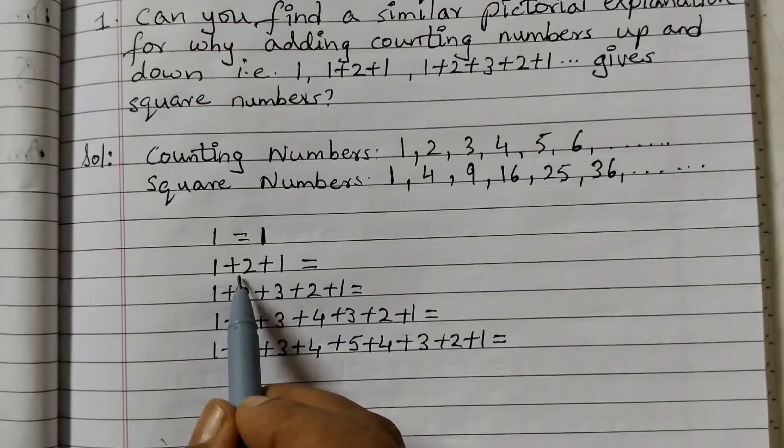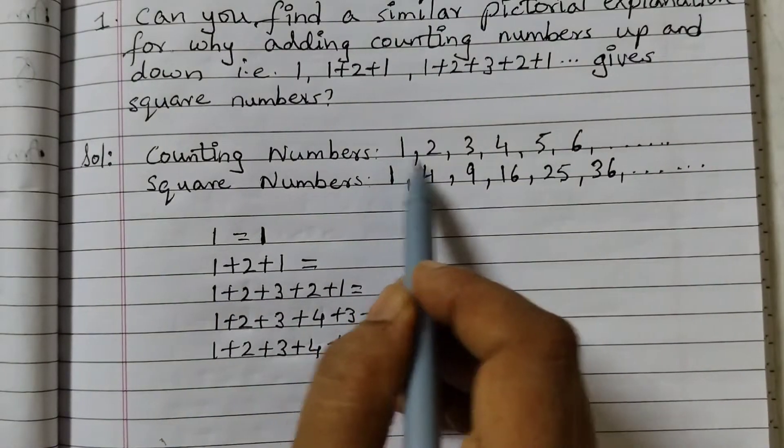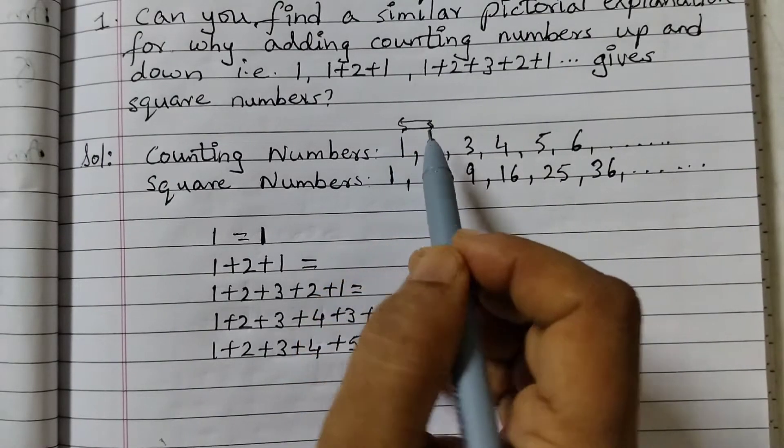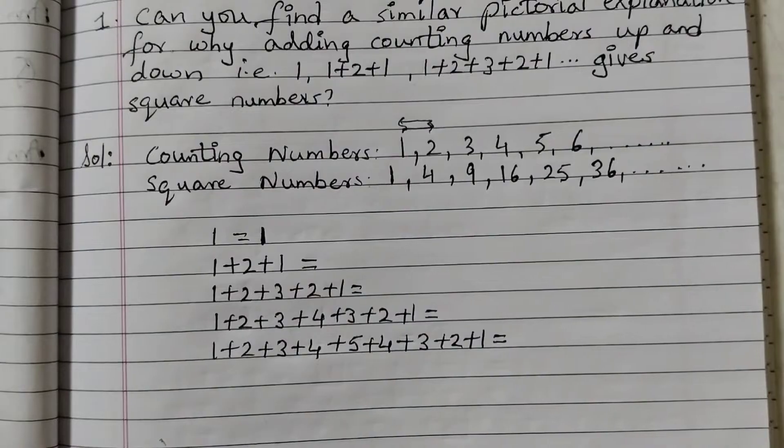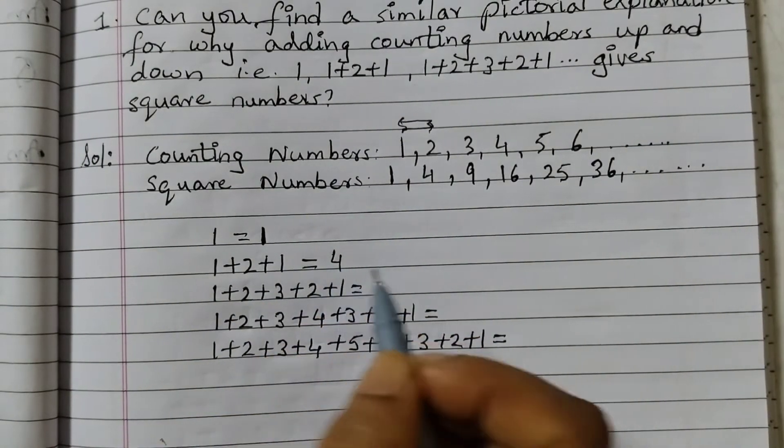Now 1 plus 2 plus 1, we are going up, that means we are moving up like this and then we are moving down. That is what is the meaning of up and down. So 1 plus 2 plus 1, that is equal to 4.